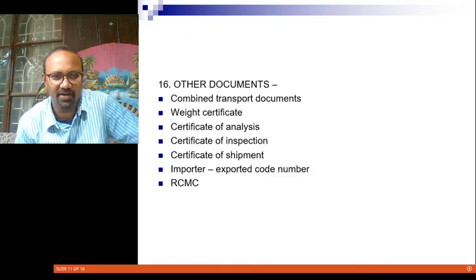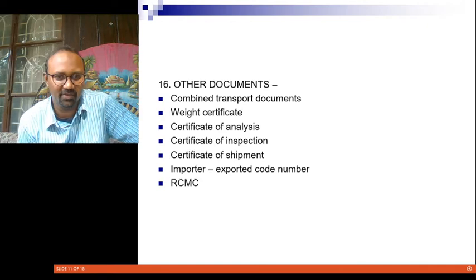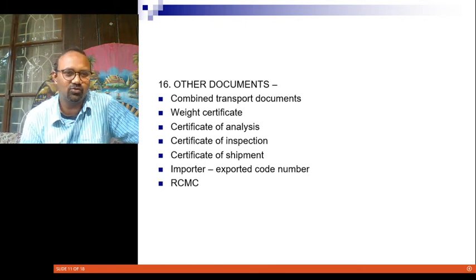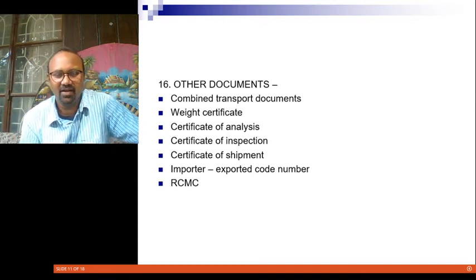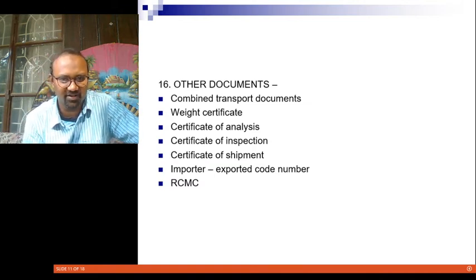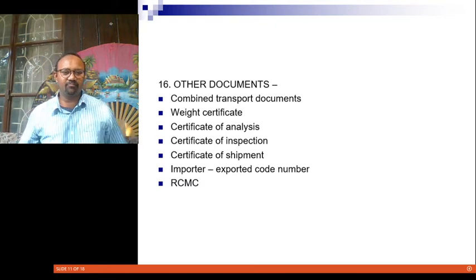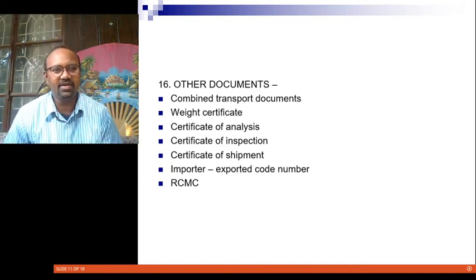Other documents that need to accompany the goods include combined transport documents covering inland transportation, shipping bill, and bill of lading. A Weight Certificate is issued by government weighing agencies at the port after your goods are weighed. There is also a Certificate of Analysis, Certificate of Inspection, Certificate of Shipment, a copy of the Import Export Code number, and the RCMC certificates. All of these are extras attached along with the primary set of documents being sent across.